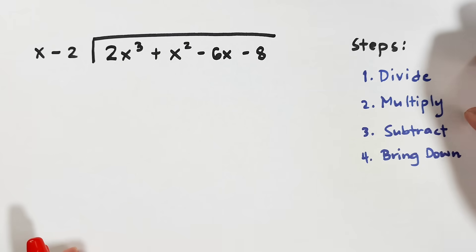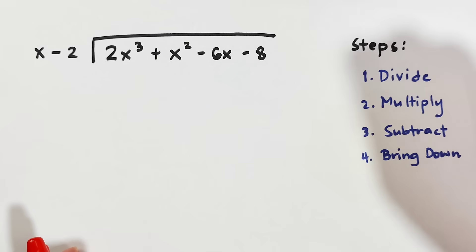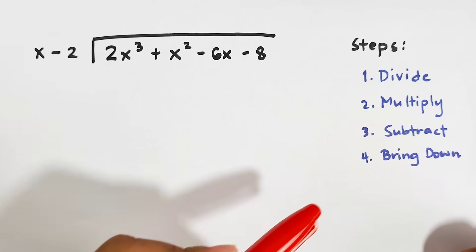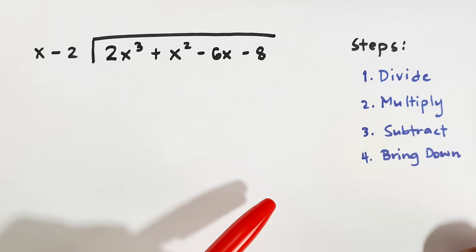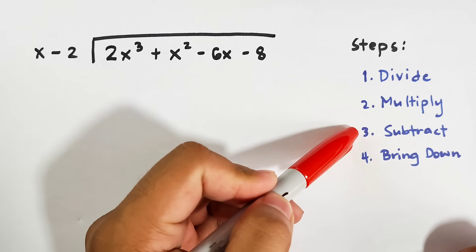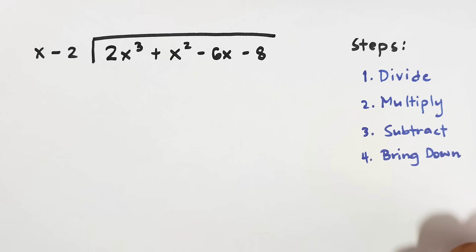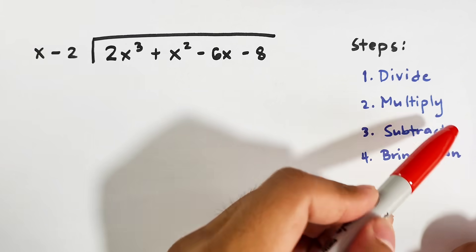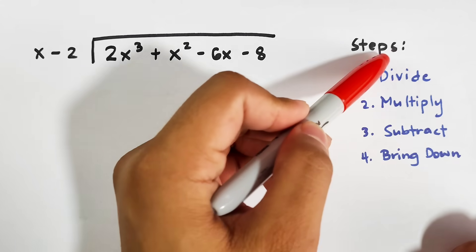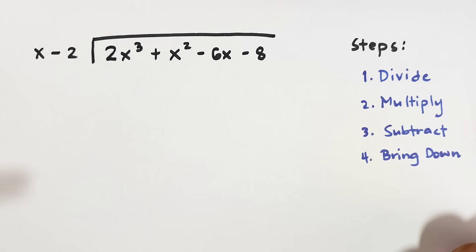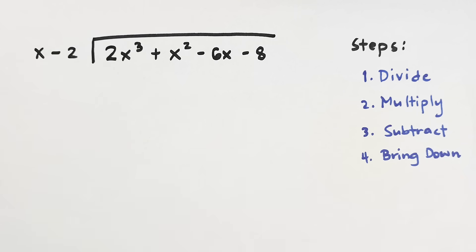How do we divide using long division? Here are the four basic steps: first you need to divide, followed by multiply, then subtract, and bring down. We will continue this entire process until we get the quotient.